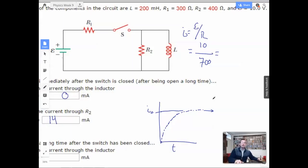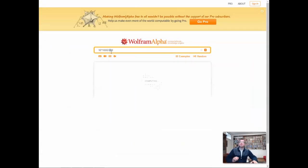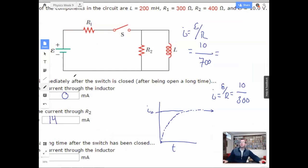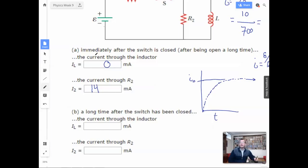So after a long time, we're going to have current equals epsilon over R, where in this case it's going to be only R1. So we're going to have 10 over R1, which is 300. So we'll do 10 over 300 times 1,000. Just change the 3 to 7, we should get like a little over twice. So 33.3.